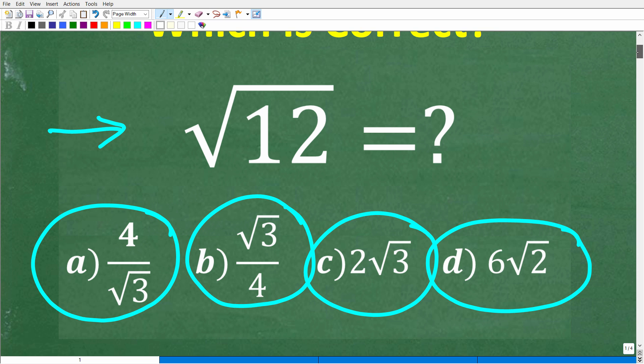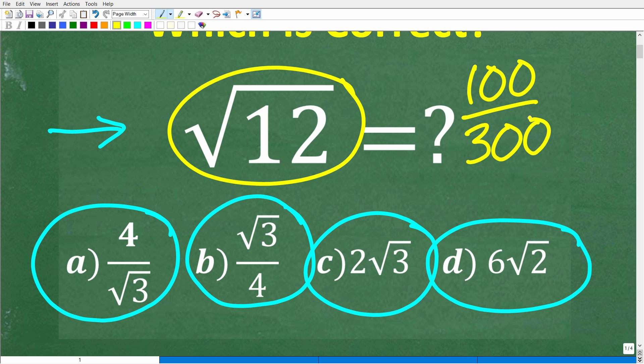All right, so one more time, we have the square root of 12. And we're trying to write this in a simpler way without using a calculator. Now, of course, we could type in the square root of 12 on our calculator and get a decimal value. But that's not what we're looking to do here. So a similar way to think of a problem like this is if I gave you the fraction 100 over 300. Would we leave that fraction like that?